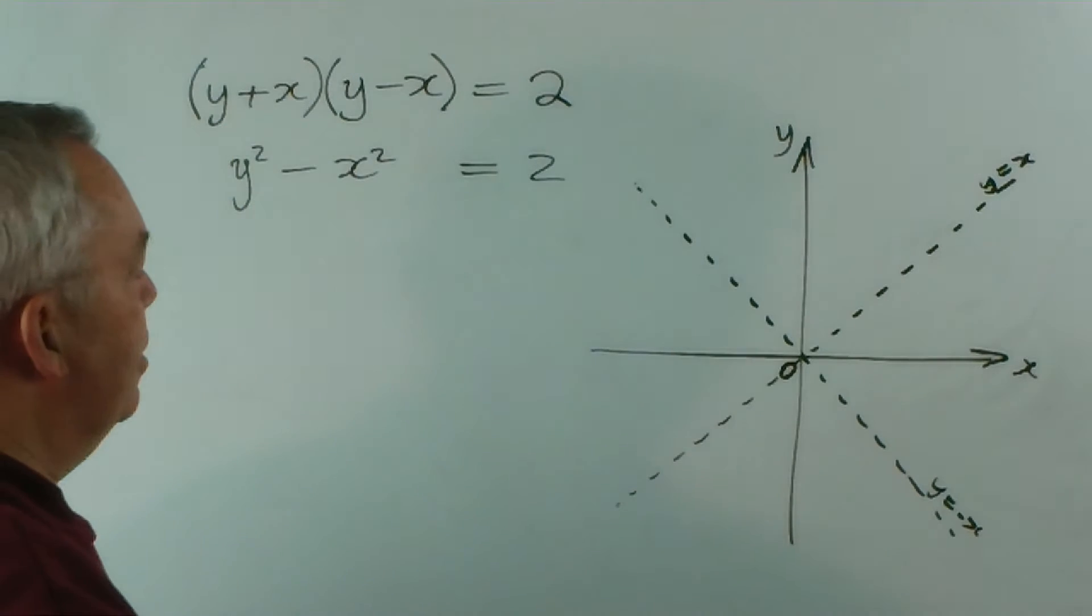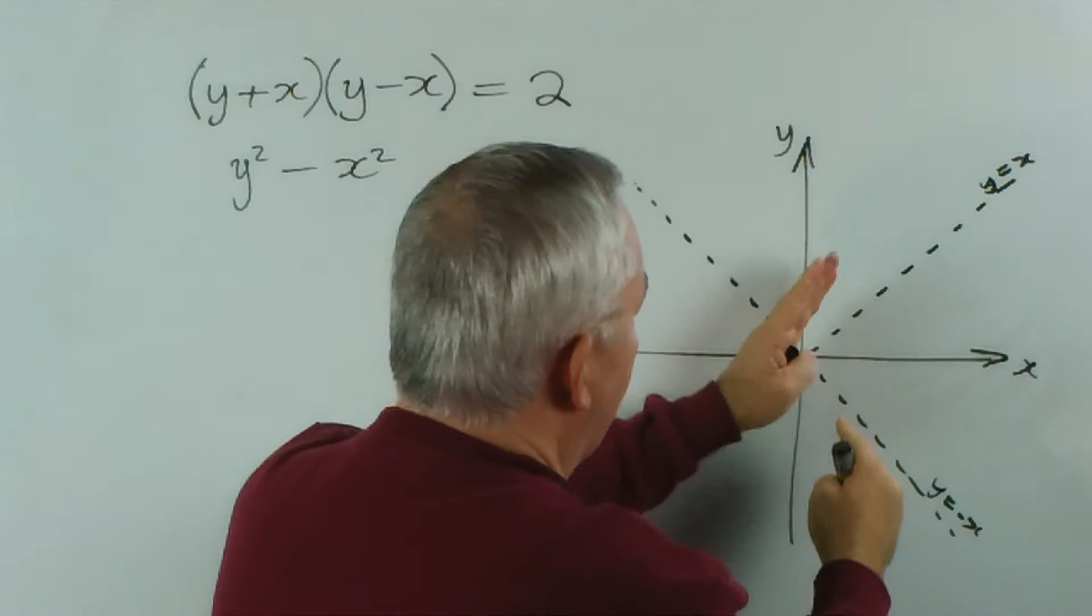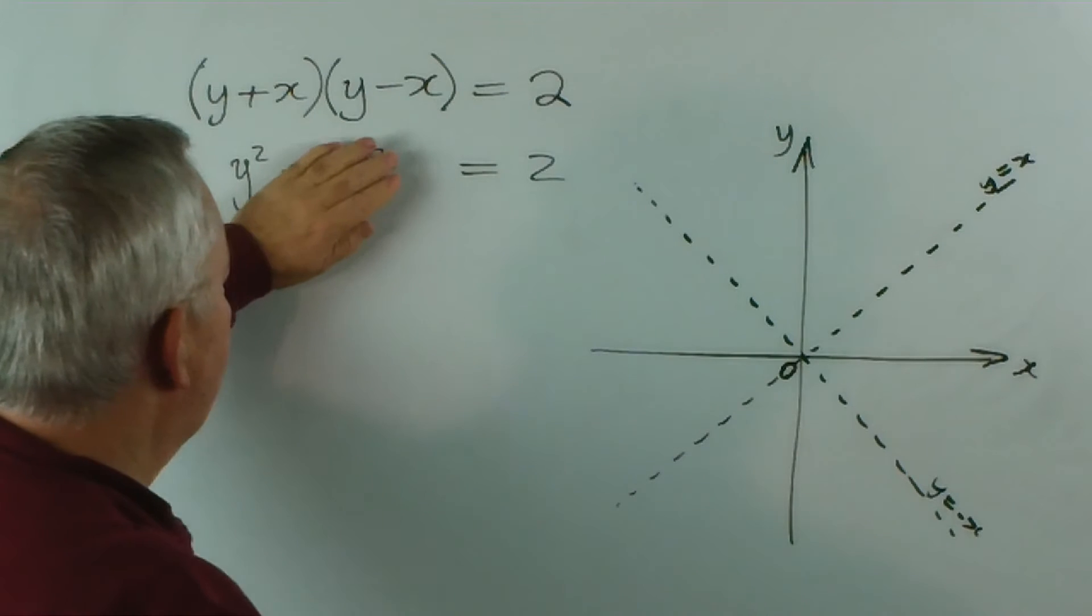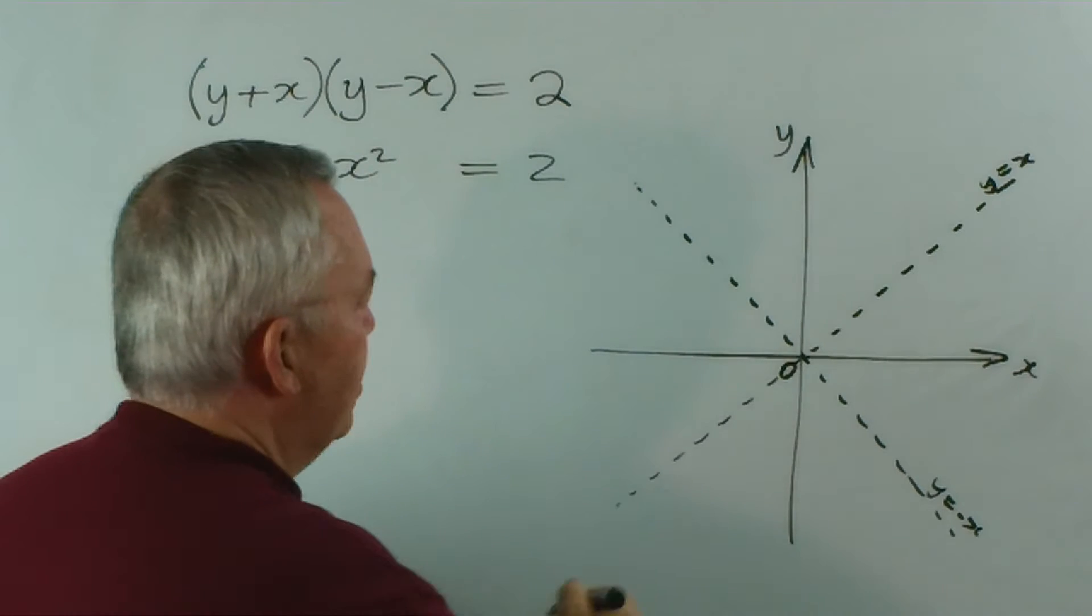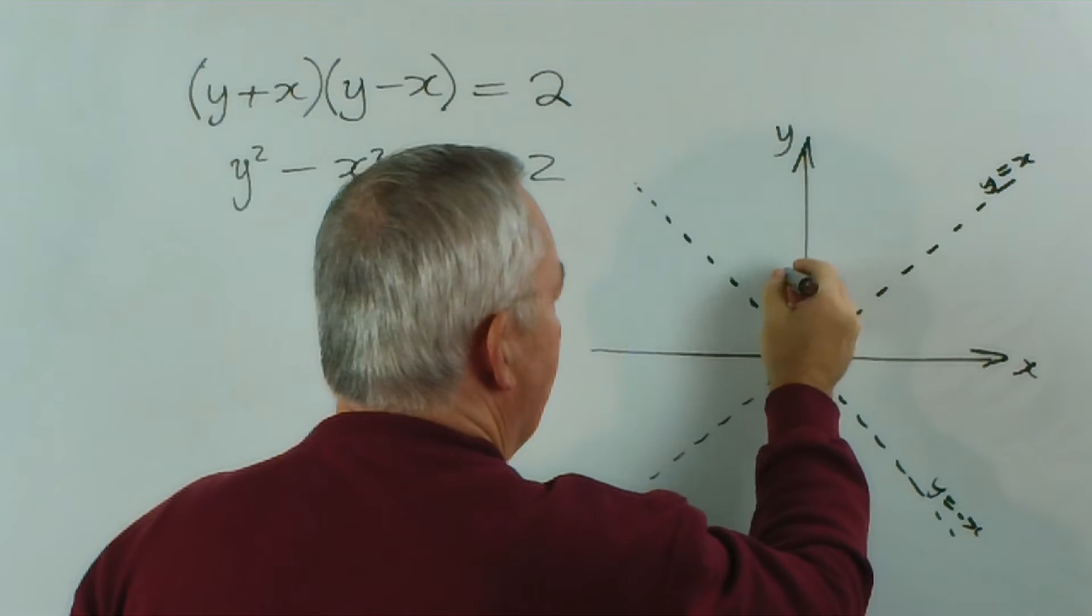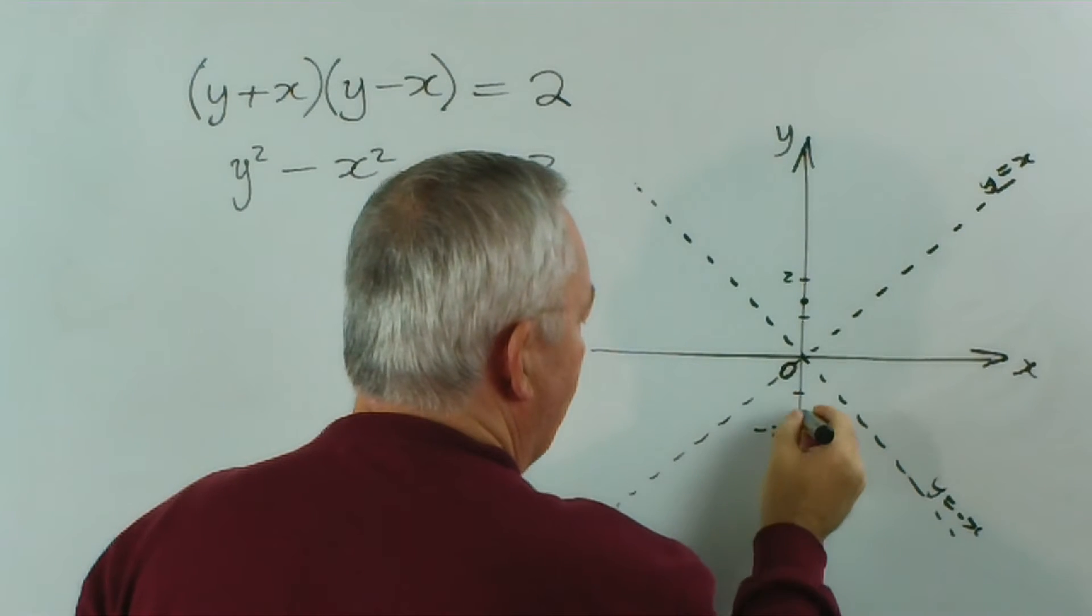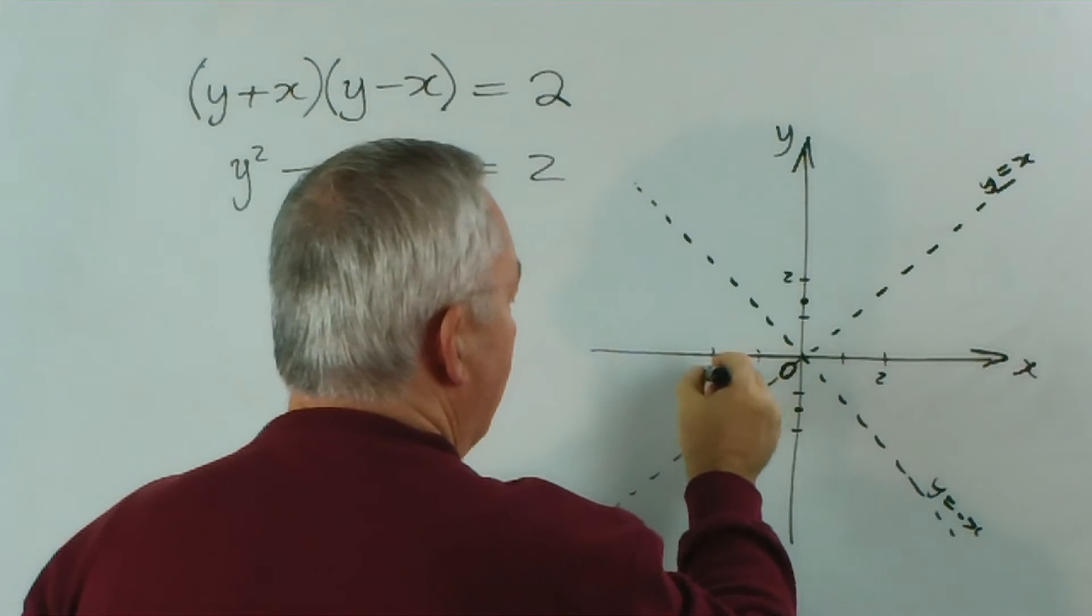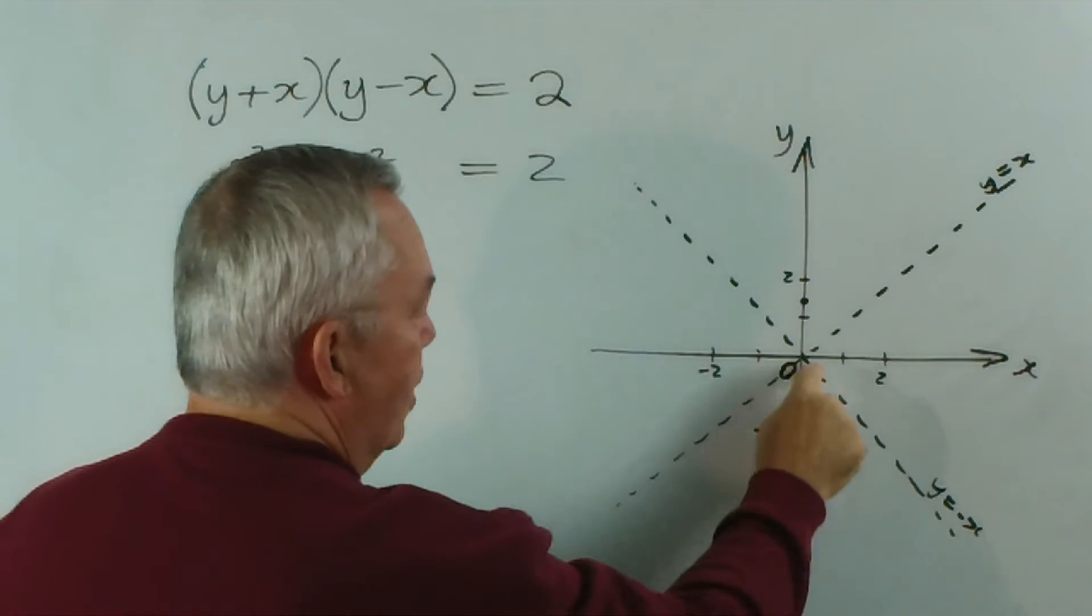So now we have two asymptotes at right angles to each other, but they've been rotated 45 degrees. Now I think you can see that if x was zero, y would be plus or minus root 2, which means x is zero here. If I had units on here, root 2 would be about there. Minus root 2 would be about here. So obviously the curve is going to go through those two points.